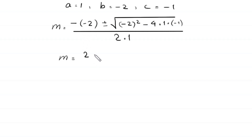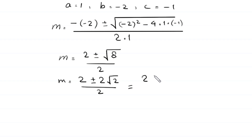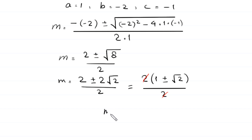m equals positive 2 plus or minus the square root of: negative 2 squared is 4, and negative 4 times negative 1 is plus 4, so 4 plus 4 equals 8, divided by 2 times 1 which is 2. The square root of 8 equals 2 times the square root of 2, giving 2 plus or minus 2 root 2 divided by 2. Factoring out 2, we get 2 times (1 plus or minus root 2) divided by 2. The 2s cancel, and we get m equals 1 plus or minus the square root of 2.